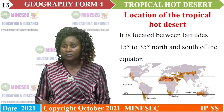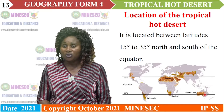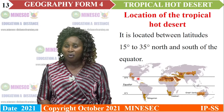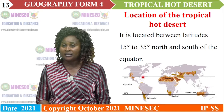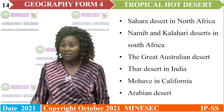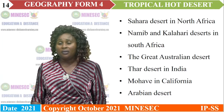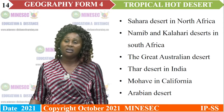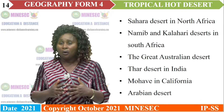The hot deserts include the Sahara Desert, the Arabian Desert, the Thar Desert in India, the Great Australian Desert, the Kalahari and Namib Deserts in South Africa, and the Mojave Desert in North America. The Sahara is in North Africa, the Namib and Kalahari in South Africa, the Great Australian Desert in Australia, the Thar Desert in India, the Mojave in California, and the Arabian Desert.